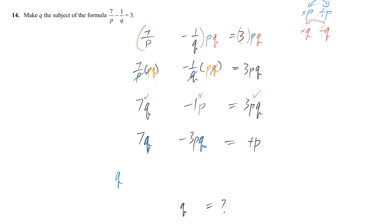So, extract Q here. From the first term, remove Q, 7 is left. From the second term, remove Q, negative 3 and P is left.